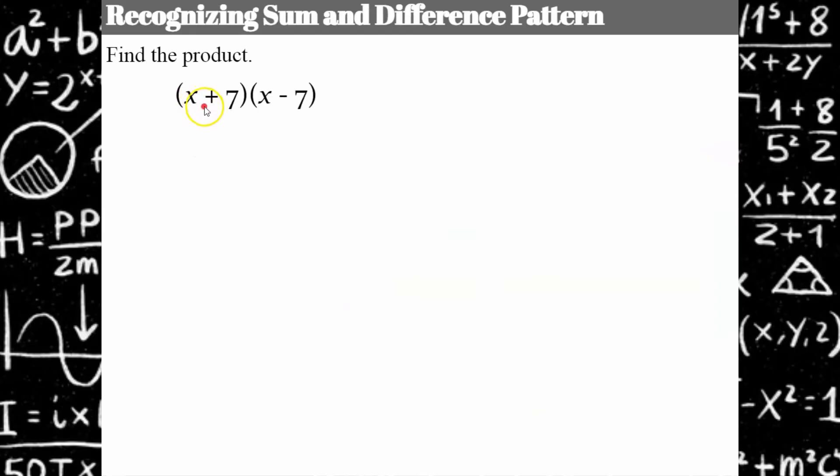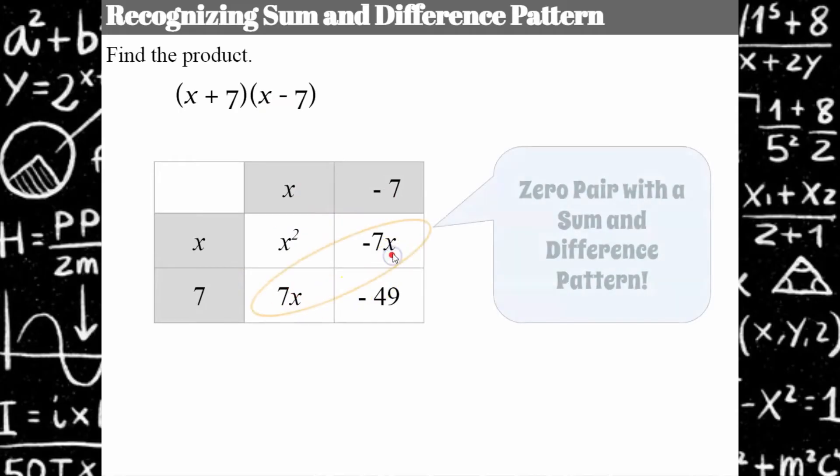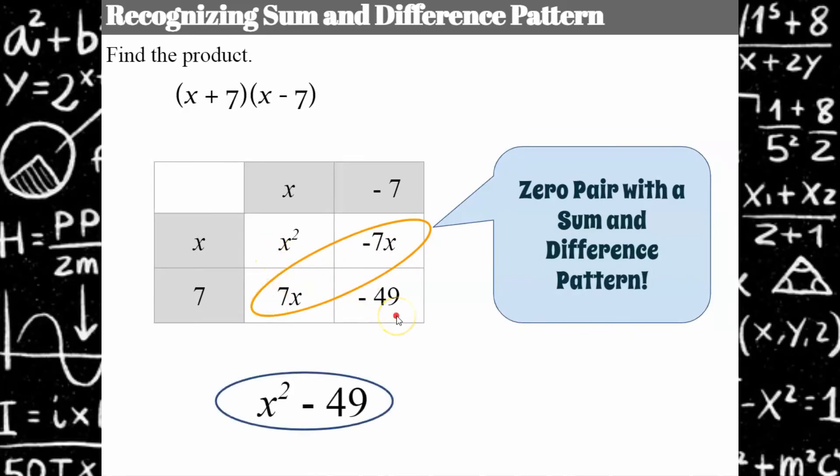So let's look at one. So here we go. We have a sum and difference pattern. We have our A in our algebraic formula is replaced with X, and our B is 7. So notice I have X plus 7 and X minus 7. I have a sum and a difference between the same two terms. So now when I go to multiply this, I could use this table method or FOIL or whatever other method you prefer when you're multiplying, but our like terms are going to form a zero pair always.